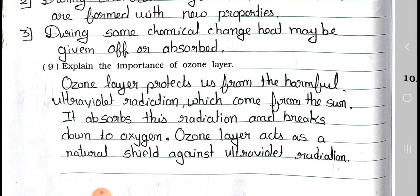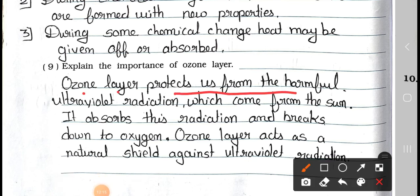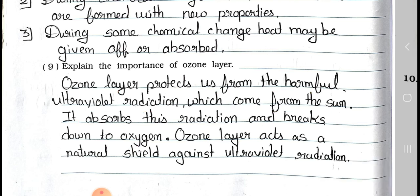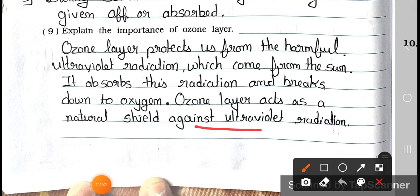Question number 9: Explain the importance of the ozone layer. Answer: The ozone layer protects us from harmful ultraviolet radiation which comes from the sun. It absorbs these radiations and breaks down to oxygen. The ozone layer acts as a natural shield against ultraviolet radiation. We will see the next exercise in part 3 of chapter number 6. Stay safe, stay healthy. Bye.